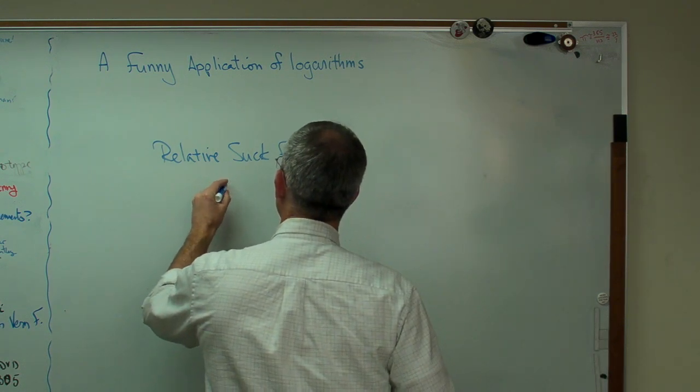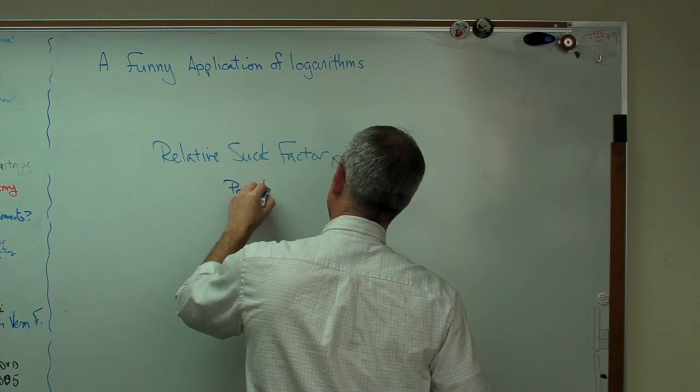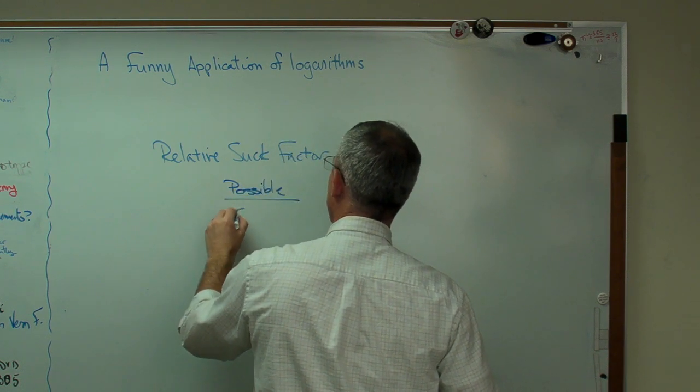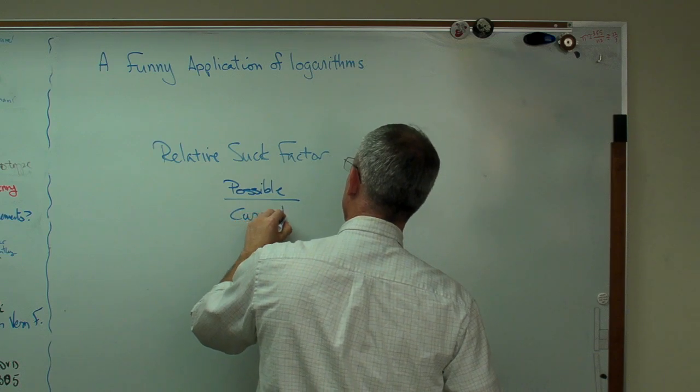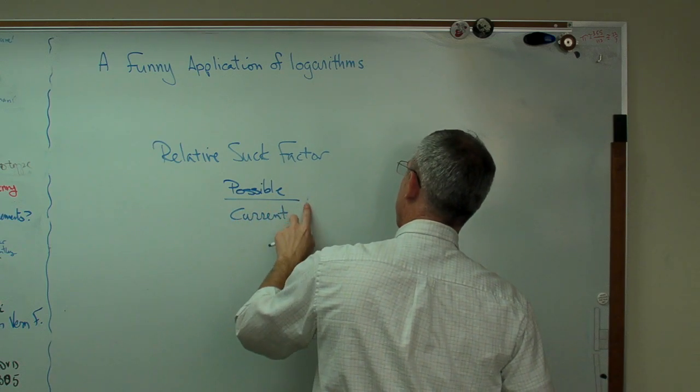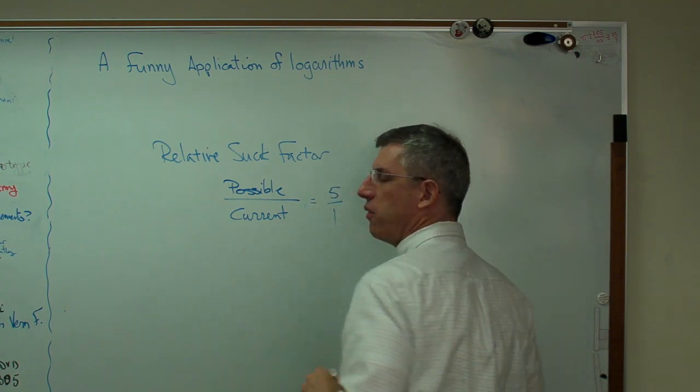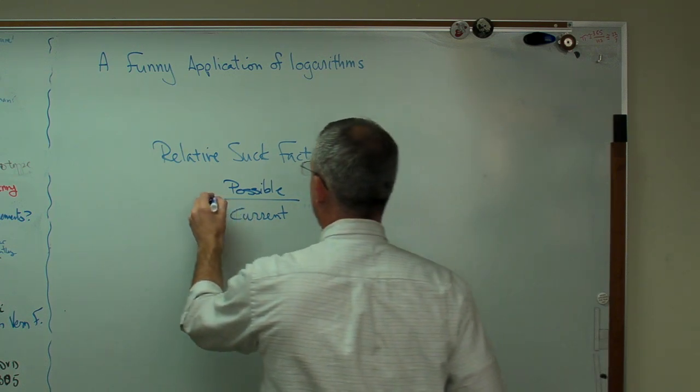That's the possible one over your current choice. That's five to one. So you get a relative suck factor of five.